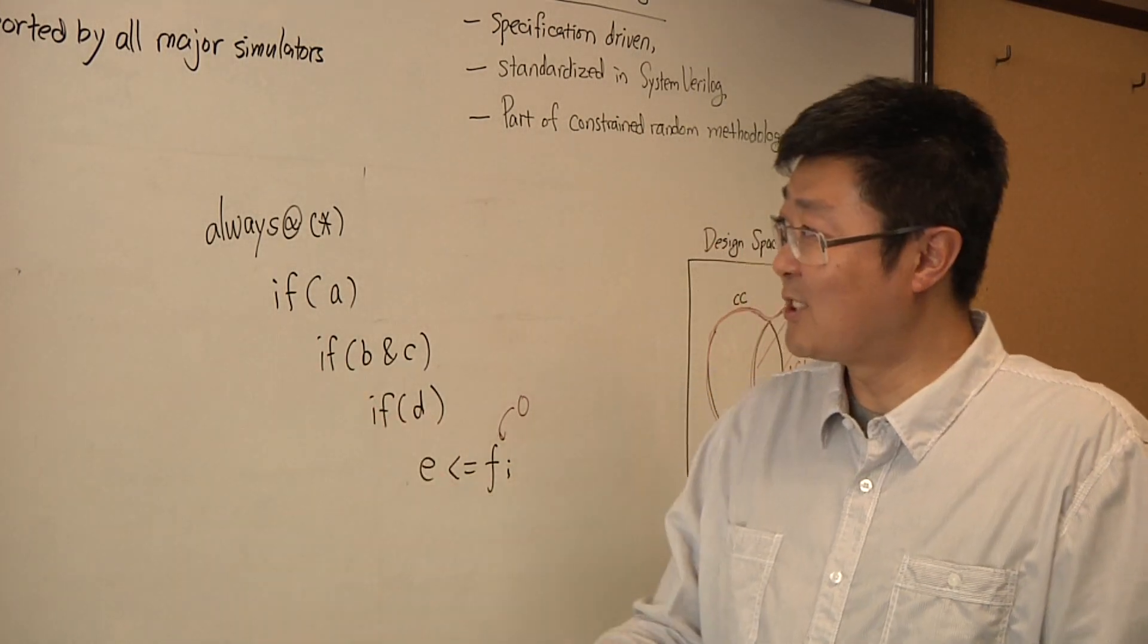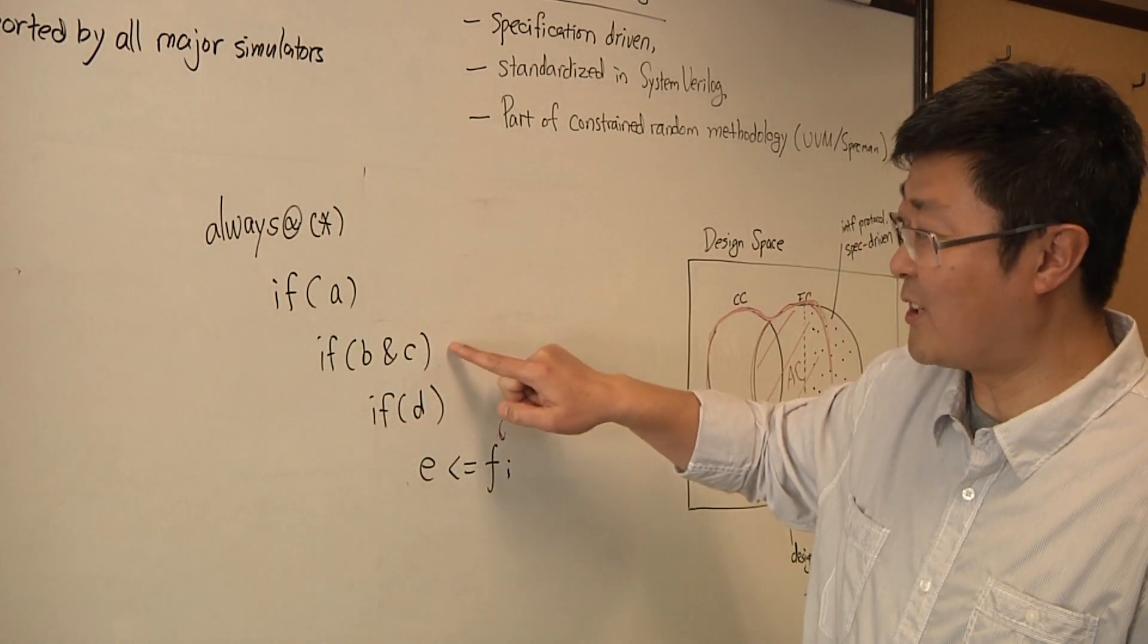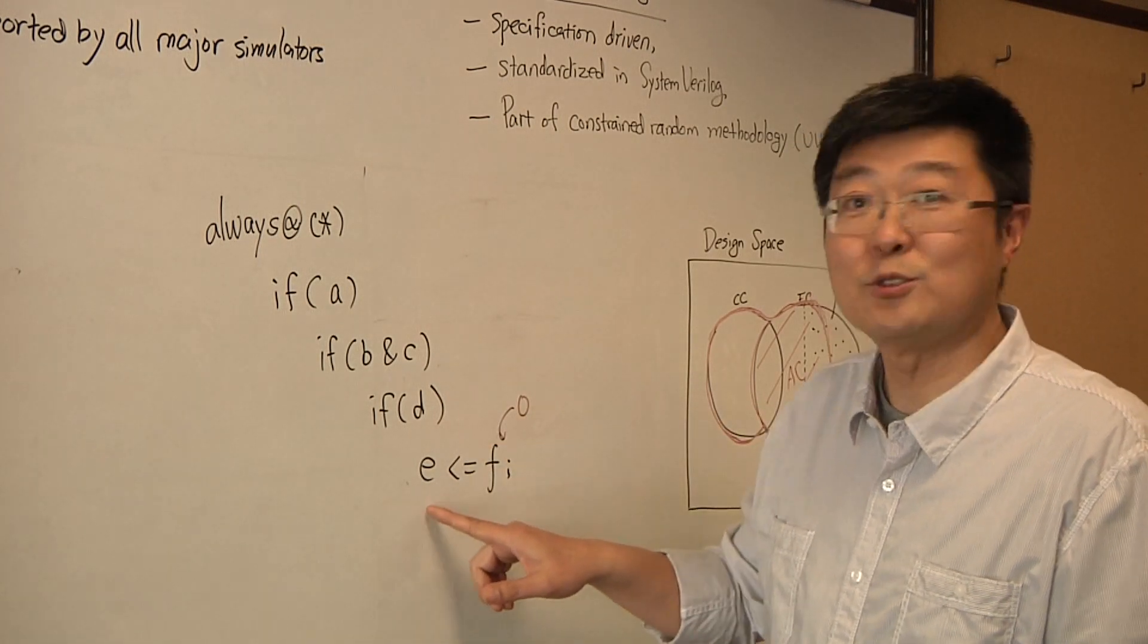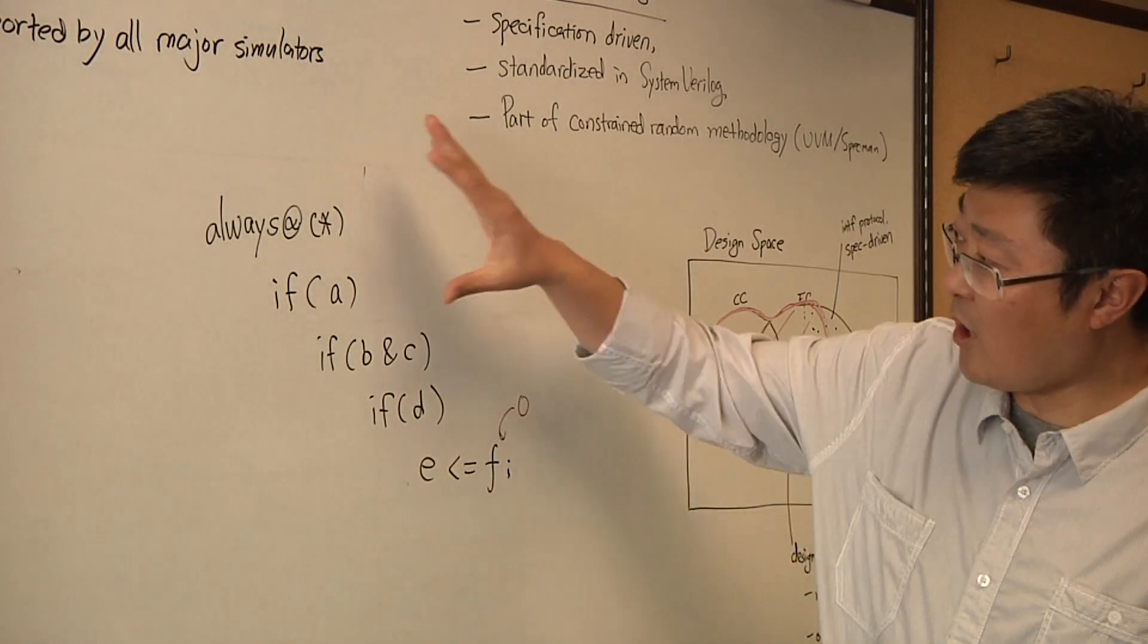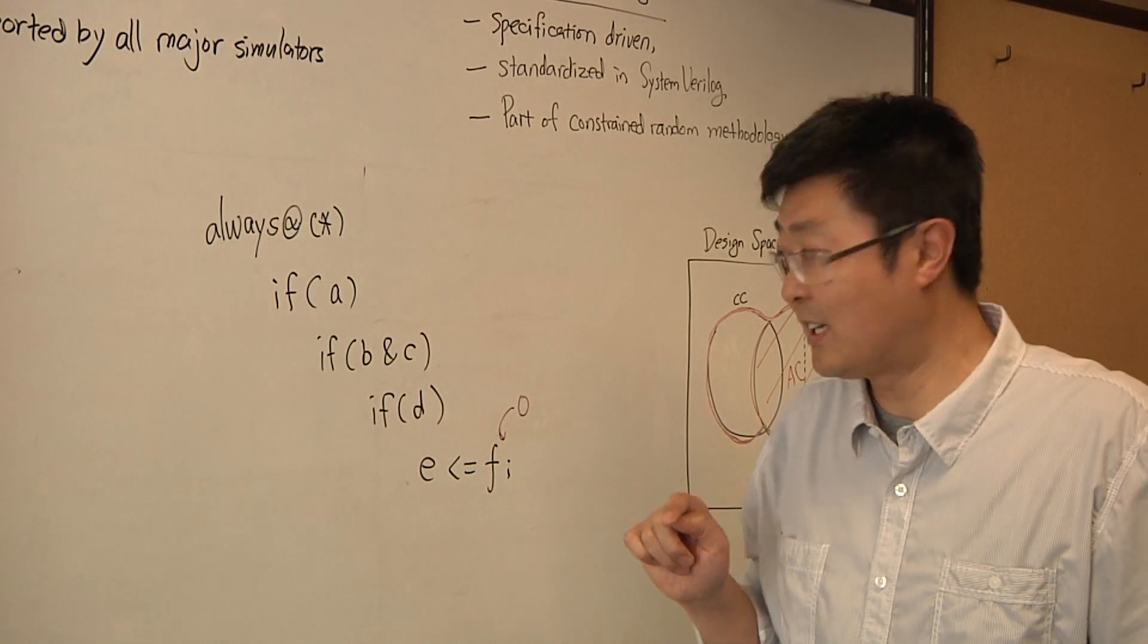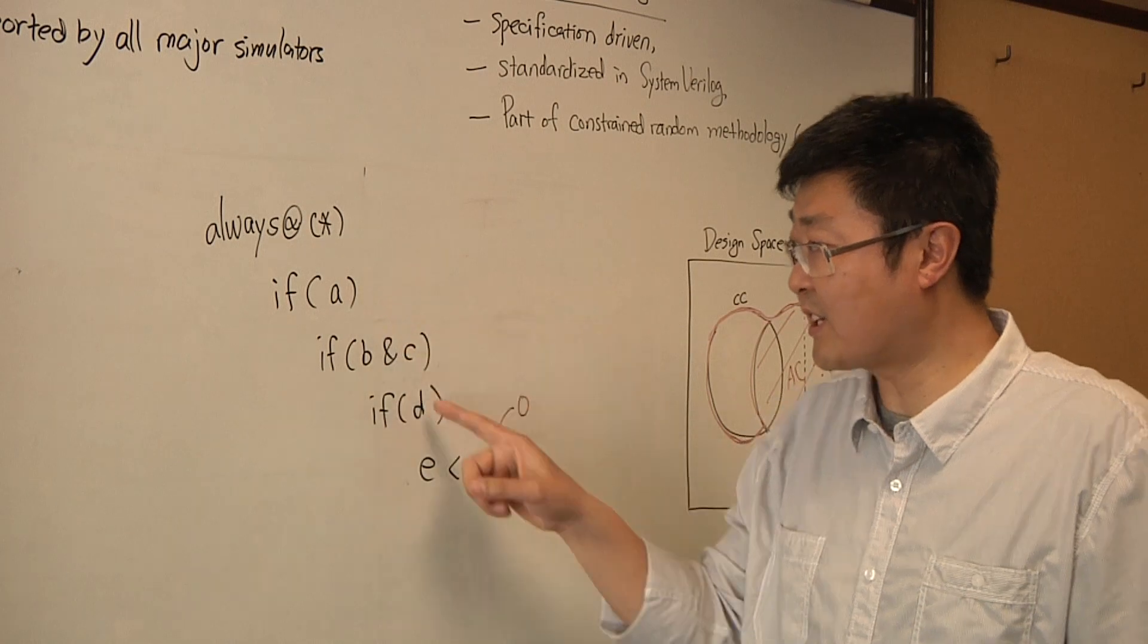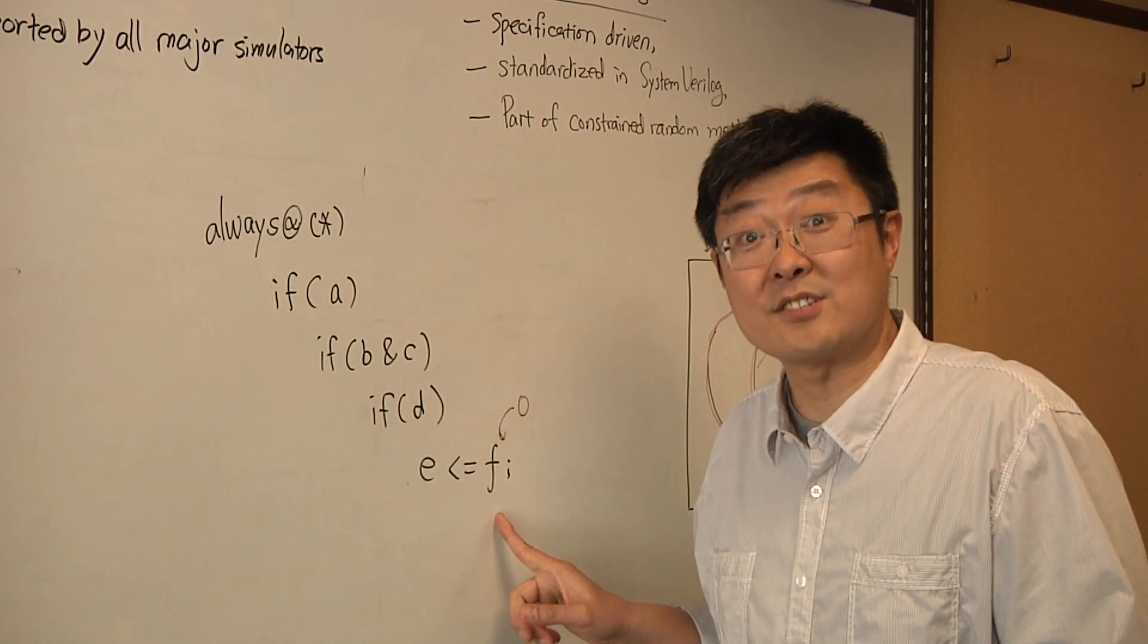I'll sketch it. You can see this is very large code with very complicated if statements. Finally, I assign f to e. The bug happens is that whenever a, b, c, and d are true, we always assign 0 to e. That's the coverage that we miss: when all these conditions are true, we need to assign a value other than 0.